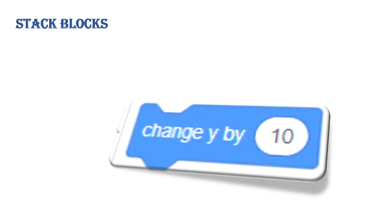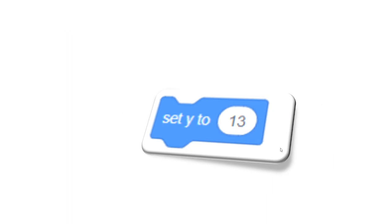Change Y By changes the Y position of the sprite. The default value is changeable. Y represents the vertical positioning of the sprite, so you can change the vertical position of the sprite as per your requirement by setting the value in this block. Set Y To fixes the Y position of the sprite using this code block.